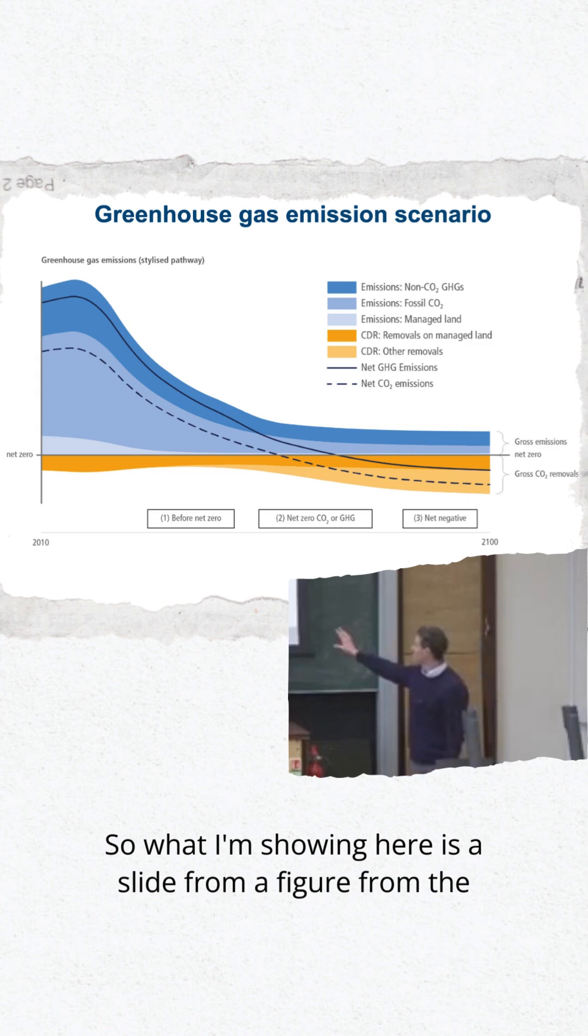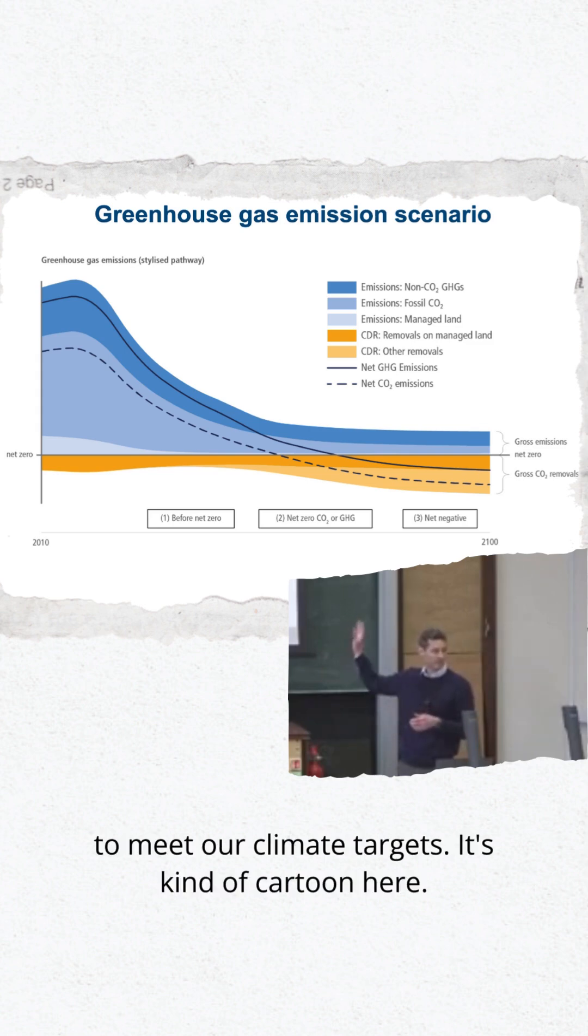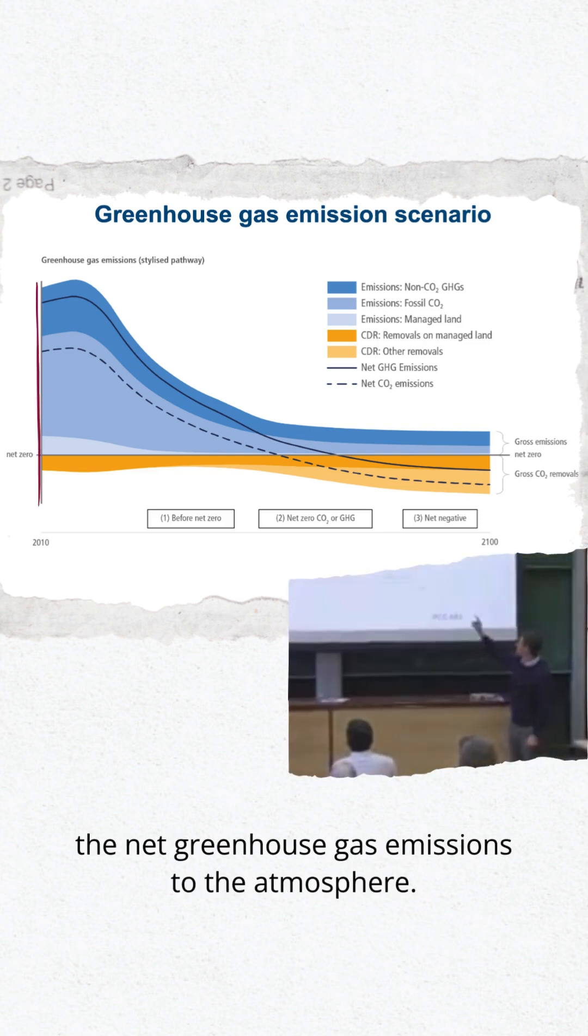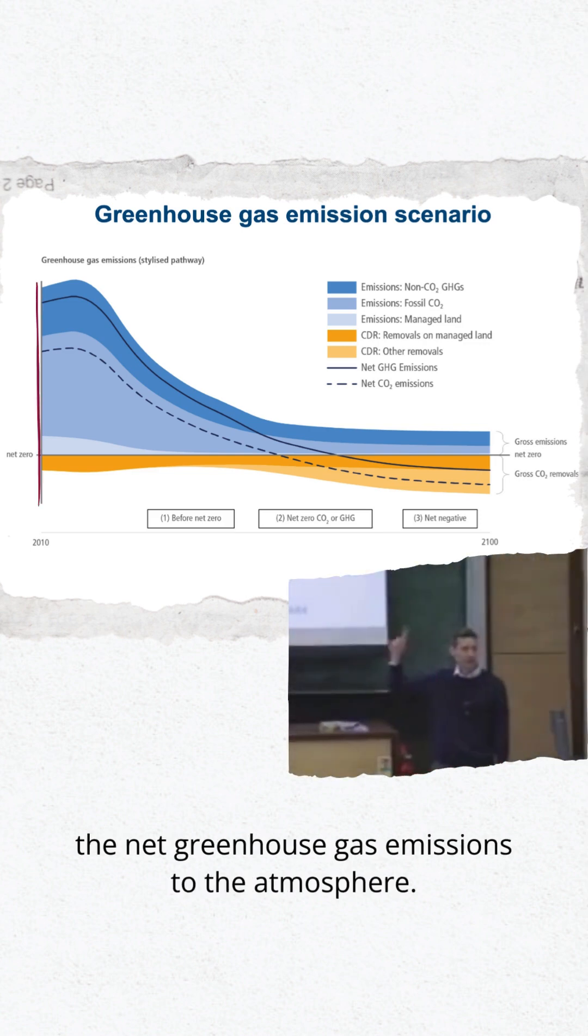What I'm showing here is a figure from the latest IPCC report. This is a scenario that allows us to meet our climate targets. The line you're seeing on the vertical axis is the net greenhouse gas emissions to the atmosphere.